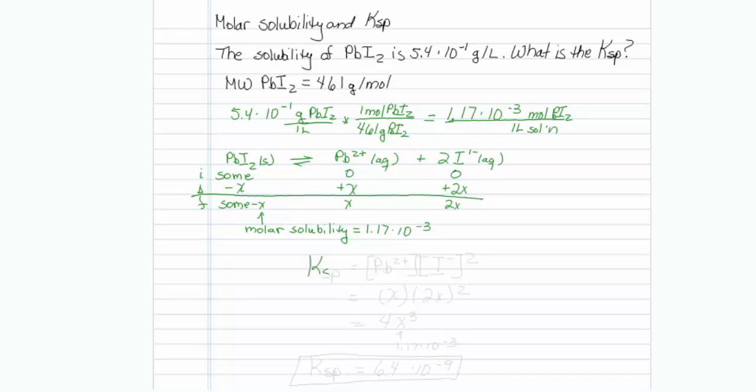So to get the KSP, I just need the lead 2 plus concentration times the iodide concentration squared, which I have represented as x times 2x squared, which turns out to be 4x cubed, and now I will substitute in my x, that value is 1.17 times 10 to the minus 3.